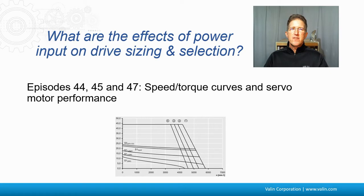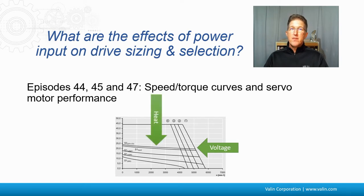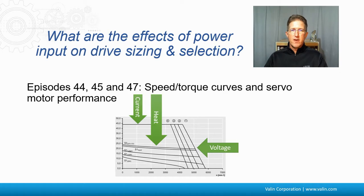What are the effects of power input on drive sizing and selection? In episodes 44, 45, and 47, we talk about speed-torque curves and servo motor performance. The quick summary is: voltage affects the speed capability of the motor; thermal capability — the heat dissipation — really affects the continuous capability of the motor; and the current capability from the drive, what it can supply, affects the peak torque of the motor.